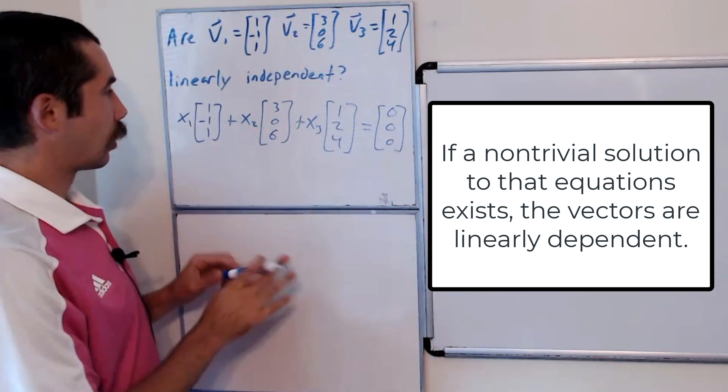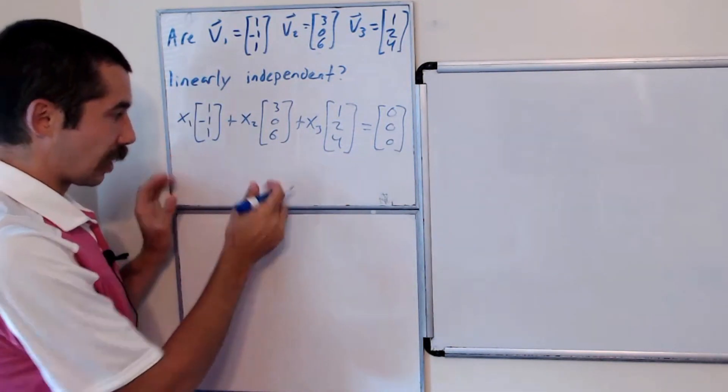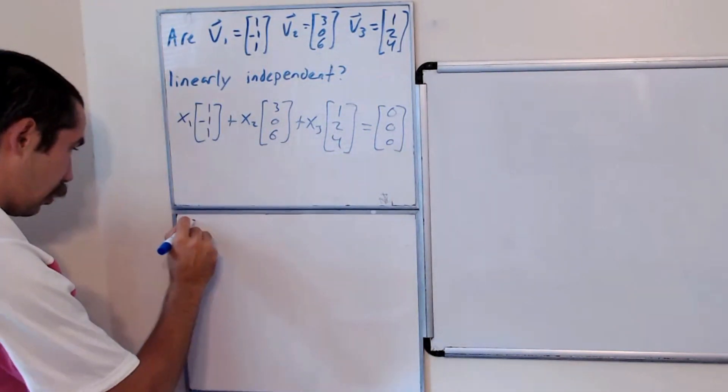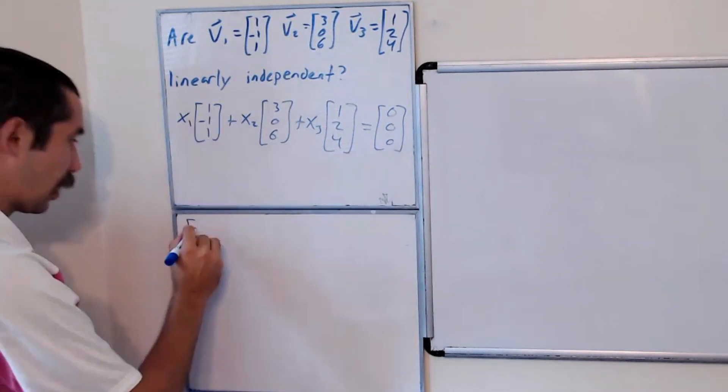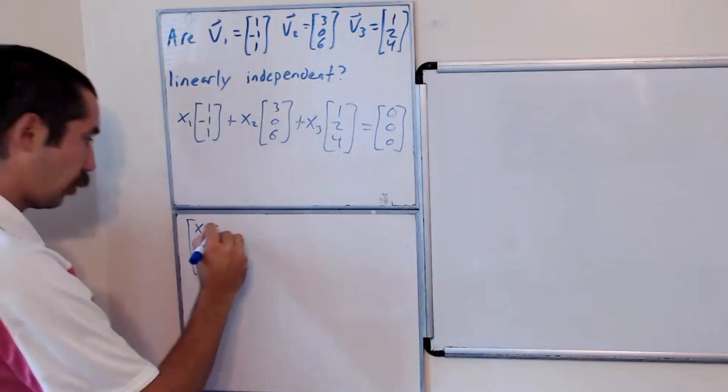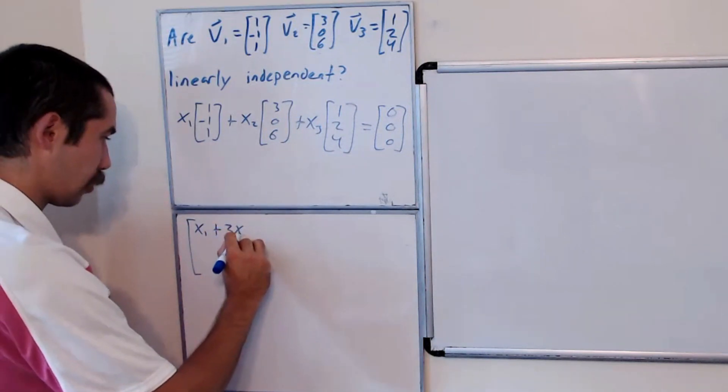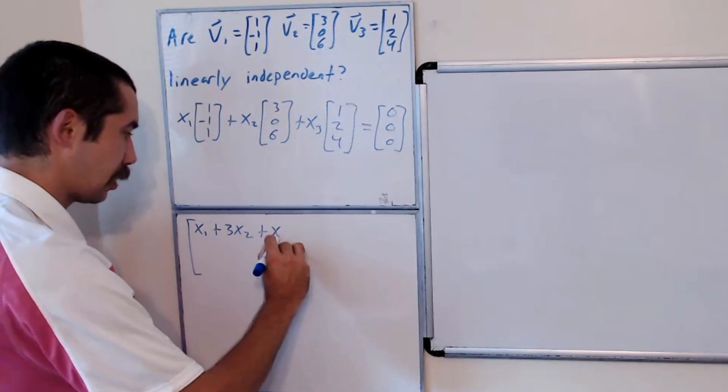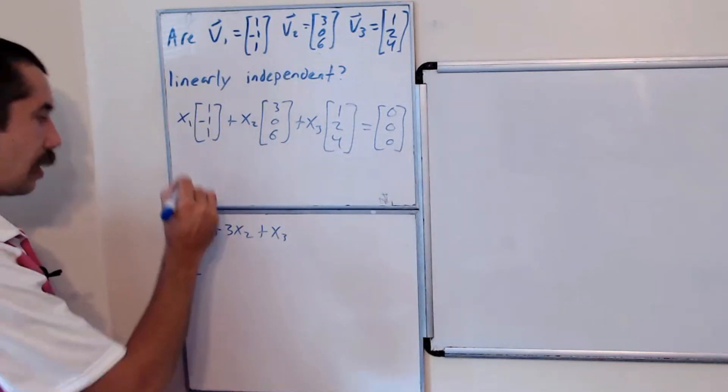So let's put this left hand side together. This becomes x1 plus 3x2 plus x3 in the first term, negative